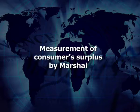Moving ahead to the measurement of consumer surplus by Marshall: Marshall tried to measure consumer surplus with the help of money. According to him, consumer surplus measures the extra utility a consumer gets by consuming a certain amount of commodities over and above the market value of those goods. It is because of the law of diminishing marginal utility that the consumer gets more marginal utility than the marginal price paid for those goods.